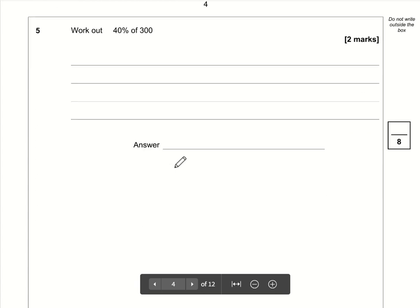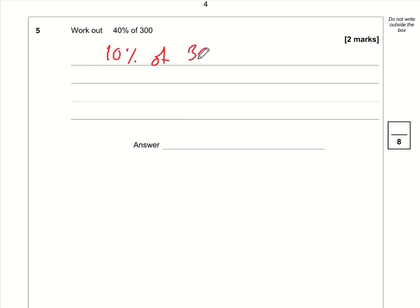Question 5: Work out 40% of 300. Let's work out 10% first. 10% of 300 is 30—you can just chop off a zero. Therefore, 40% of 300 is four lots of 30, which is 120.